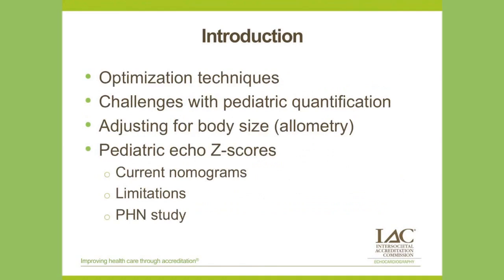As an introduction to the question of whether to Z or not to Z, echo quantification is critical in the clinical management of pediatric heart disease. Distinguishing between normal and abnormal values is important, and echo measurements are frequently used as outcome variables in clinical research studies. We'll cover optimization techniques in pediatric echocardiography, challenges with specific protocols for pediatric echo quantification, adjusting measurements for body size — also known as allometry — and everything you ever wanted to know about Z-scores, including currently available pediatric echo nomograms and their limitations.